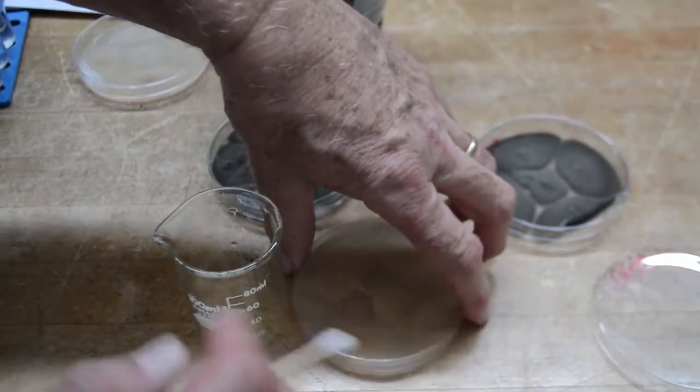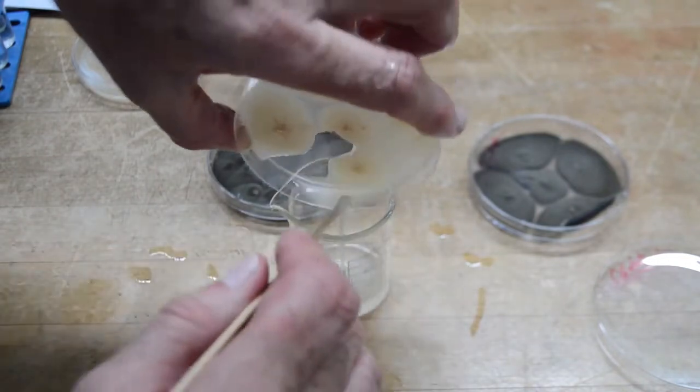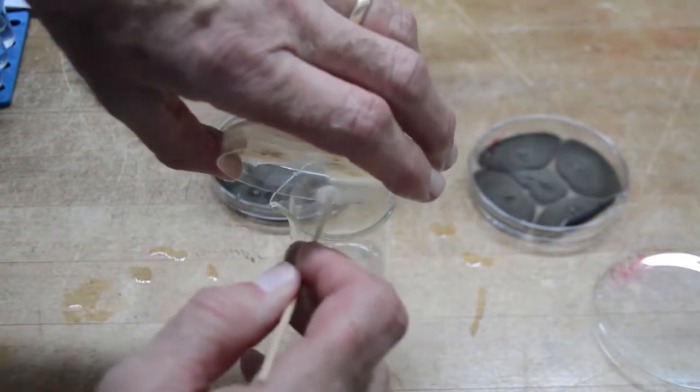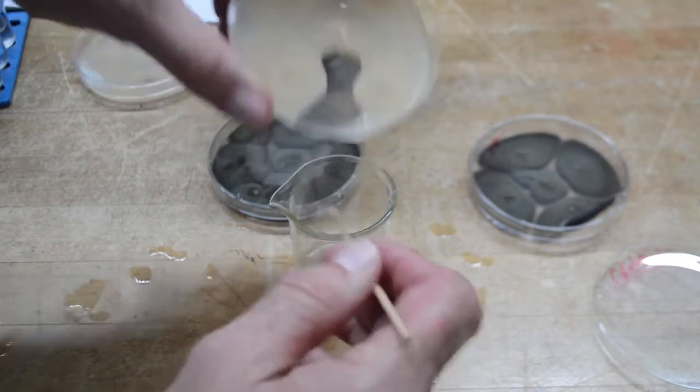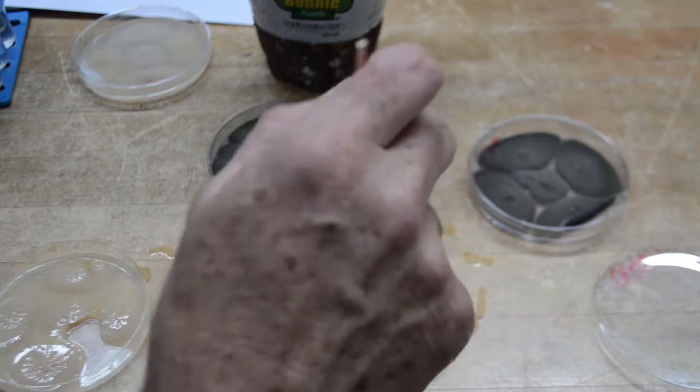The suspension of spores is then transferred to a beaker. The concentration of spores could be determined or modified at this point. When the water was added, it was clear. Now the suspension is turbid from the amount of spores that were harvested.